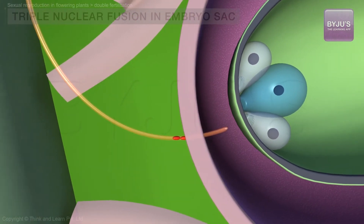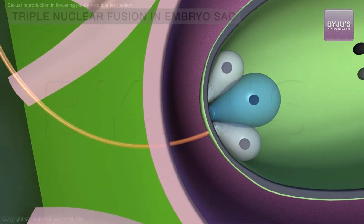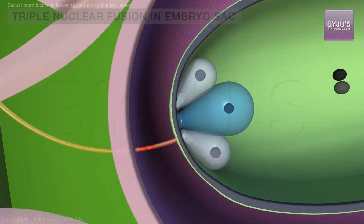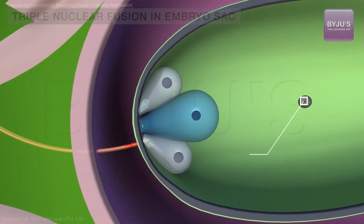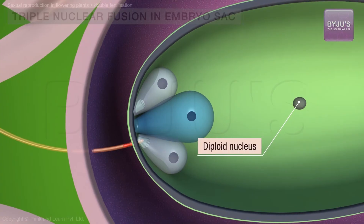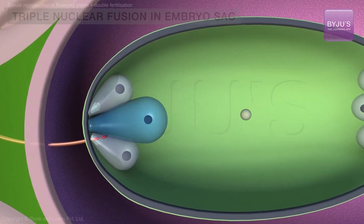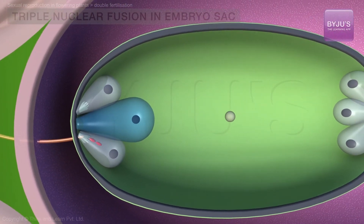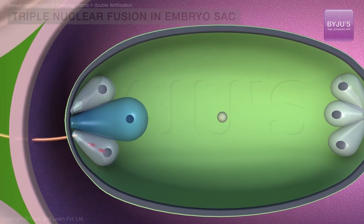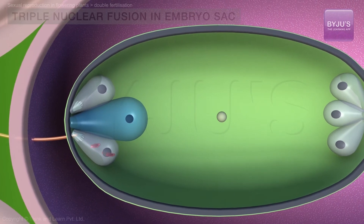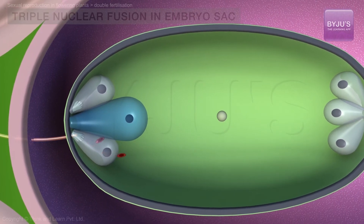the polar nuclei in the female gametophyte fuse into one diploid nucleus. The pollen tube bursts and releases the two male gametes into the cytoplasm of the synergid.